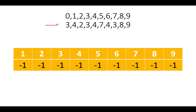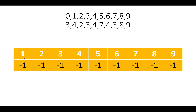I've taken a slightly longer example so you get a good hold of the concept. The elements are: 3, 4, 2, 3, 4, 7, 4, 3, 8, 9. The answer for this example would be length three, because four occurs twice and the length of that subarray becomes three. This becomes our answer.